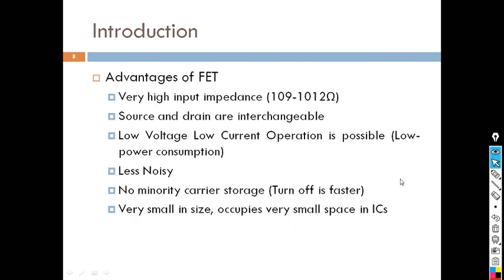FET is a unipolar device and BJT is a bipolar device. Bipolar means that current in BJT is contributed by both positive charges (holes) and negative charges (electrons). In FET, conduction is by either holes or electrons — that is why FET is called a unipolar device and BJT is called a bipolar device.